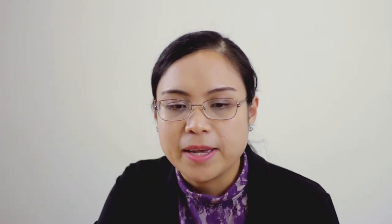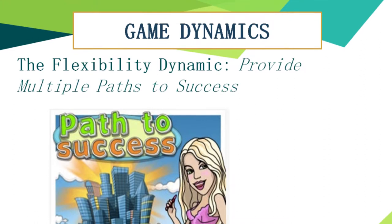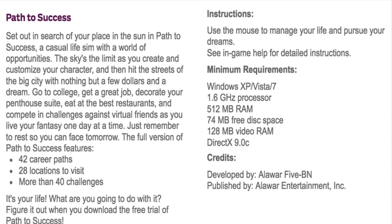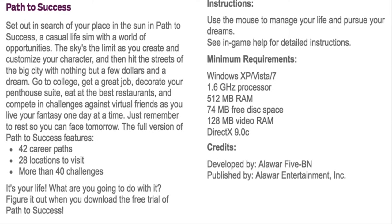The third element is the flexibility dynamic: providing multiple paths to success. In real life, there is no single way to succeed — there are many ways a learner can adapt to achieve the target. There is an online game called Paths to Success, a casual life sim where you create and customize your character and hit the streets of the big city with nothing but a few dollars and a dream — go to college, get a great job, decorate your penthouse suite, eat at the best restaurants, and compete in challenges.